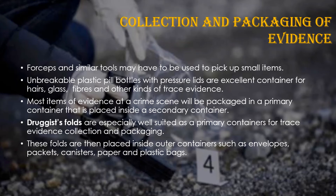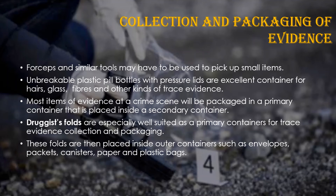Collection and packaging of evidence: forceps and similar tools may have to be used to pick up small items. Unbreakable plastic pill bottles with pressure lids are excellent containers for hair, glass, fiber, and other trace evidence. Most items of evidence at a crime scene will be packaged in a primary container that is placed inside a secondary container. Druggist folds are especially well-suited as a primary container for trace evidence collection and packaging. These folds are then placed inside outer containers such as envelopes, packets, canisters, paper and plastic bags.